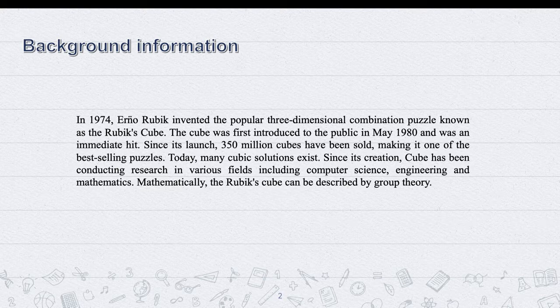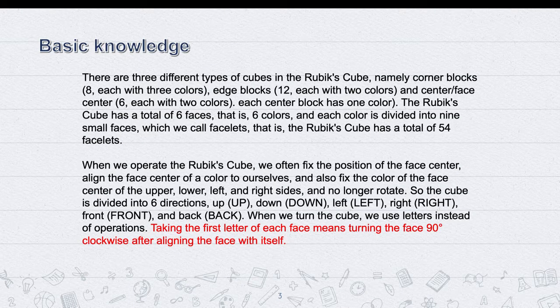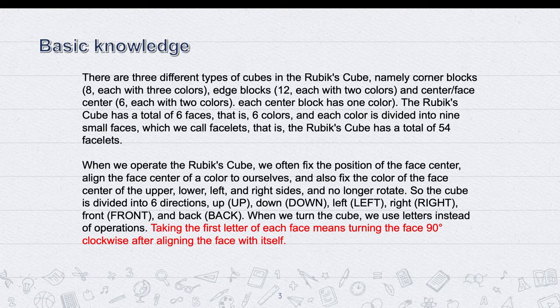Mathematically, the Rubik's cube can be described by group theory. The Rubik's cube has a total of six faces and six colors, so the cube is divided into six directions.